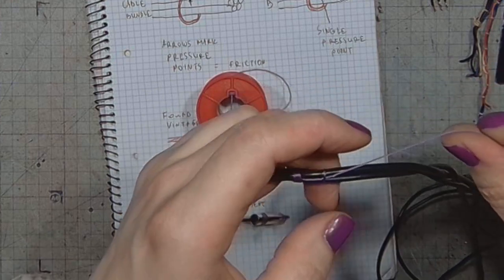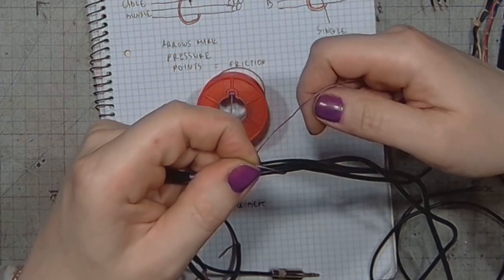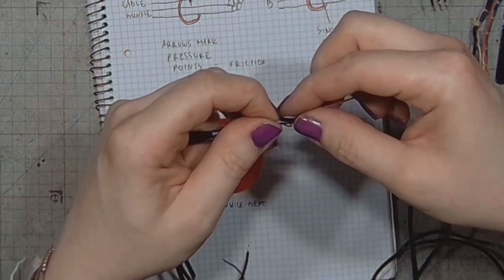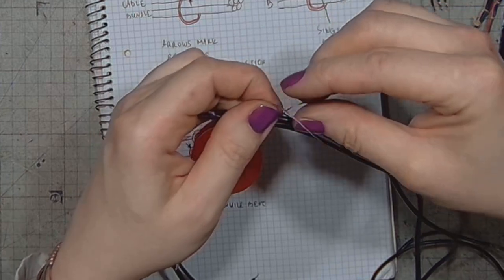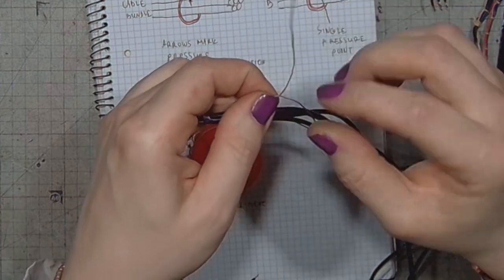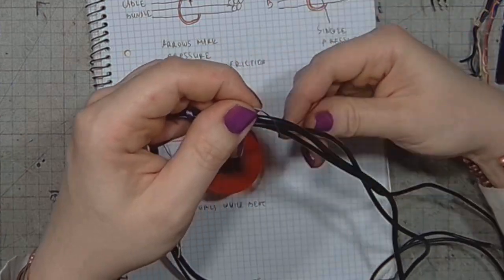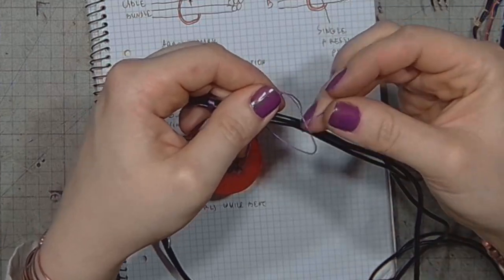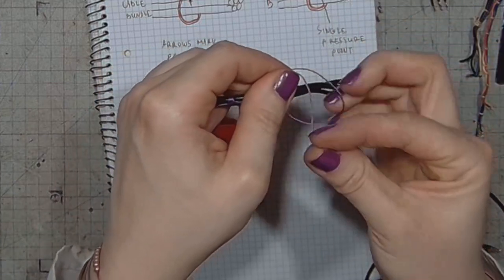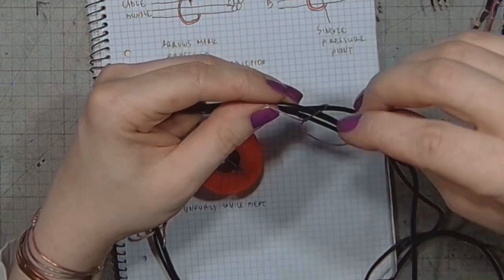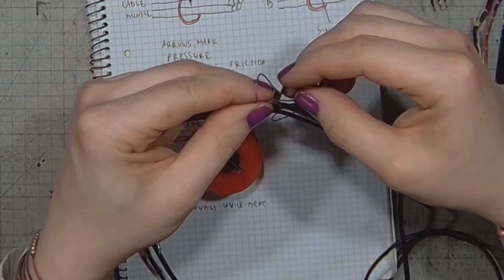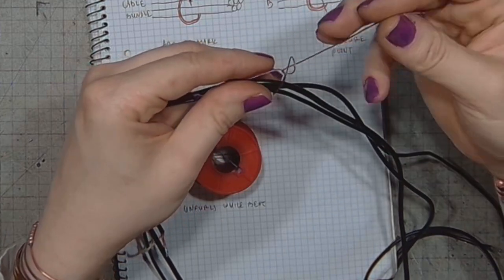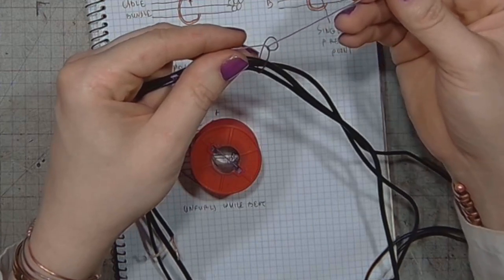Let's go under the cable bundle, then we go under the thread. Is my dexterity failing me? No. And then, we go under the thread, under the loop. Right here, we have something like this.